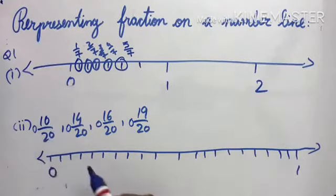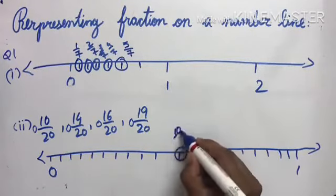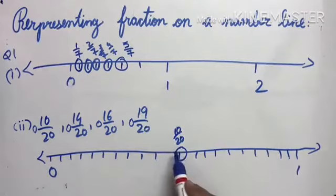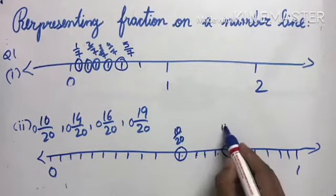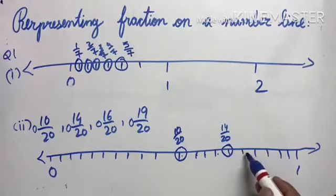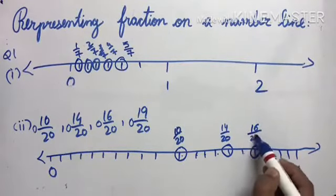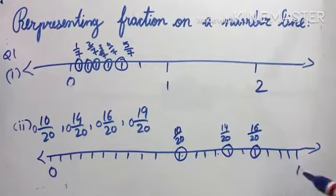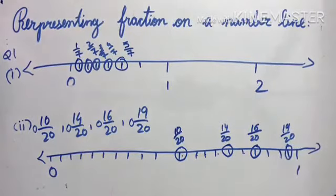Counting the 20 parts: 10/20 falls at the 10th part. Then continuing, 14/20 falls at the 14th part. 16/20 falls at the 16th part. And 19/20 falls at the 19th part. This is how we can represent proper fractions on a number line.